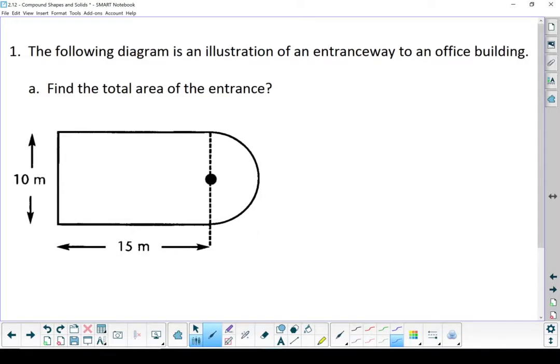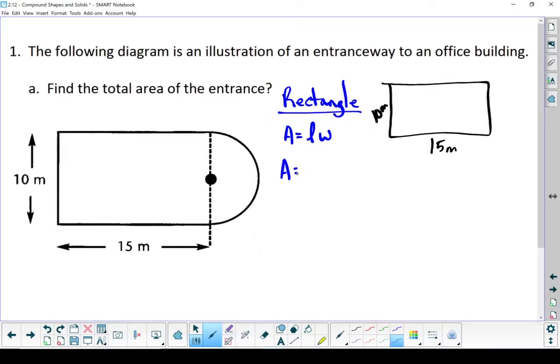So starting first with our rectangle, area of our rectangle is length times width. If I quickly redraw it, I've got a rectangle that looks like that. It's 15 meters along that side. It's 10 meters on that side. Area equals 15 meters times 10 meters. Multiply those two together. 10 times 15 gives me 150. Put a box around that. We are coming back for that number a little bit later.